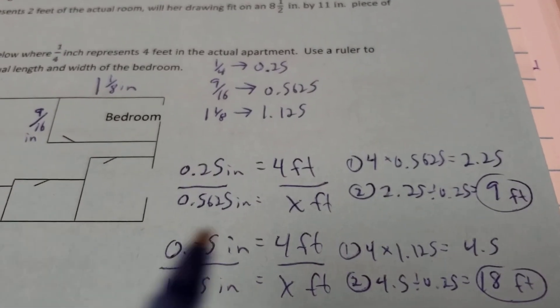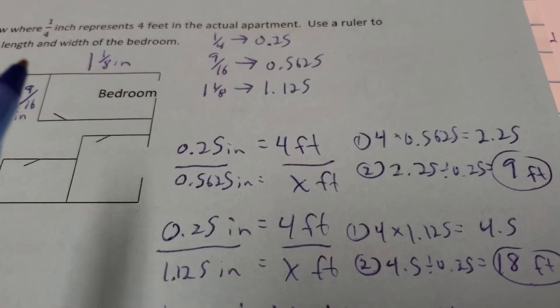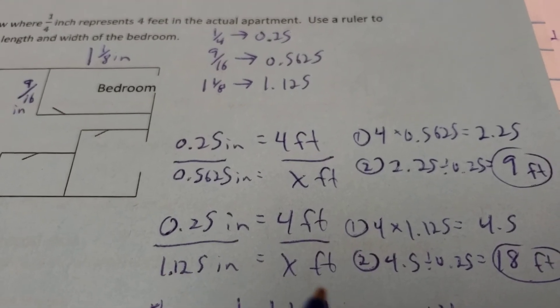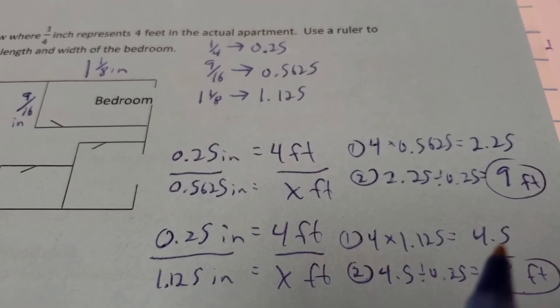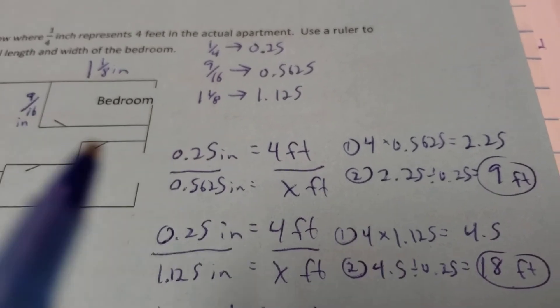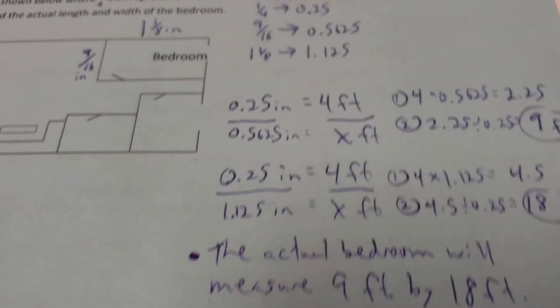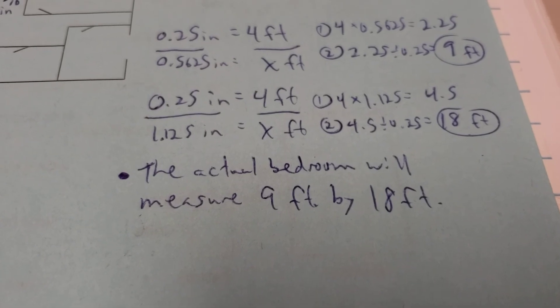And same scale, 0.25 inches equals 4 feet. So the longer measurement of the bedroom, 1 and 1/8, or what we call 1.125 inches, is going to equal how many feet? Cross multiply 4 and 1.125, and I get 4.5. Divided by my leftover number of 0.25, and I get 18 feet. So my measurement here is going to be 18 feet. So the actual bedroom ends up being 9 feet by 18 feet.